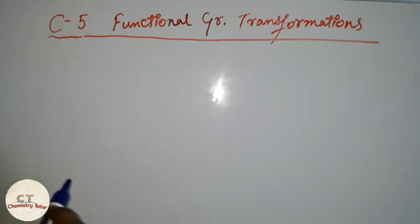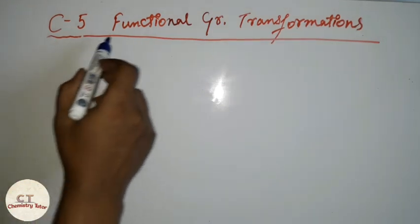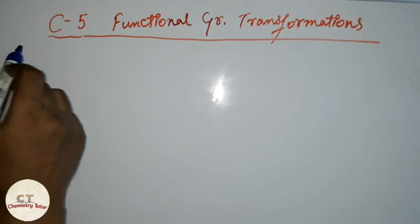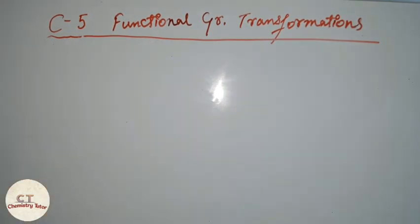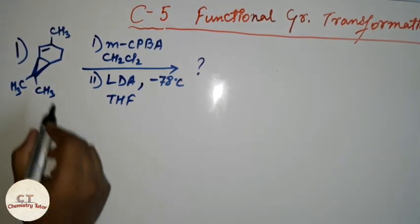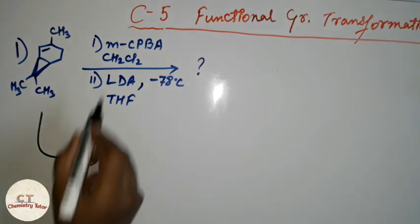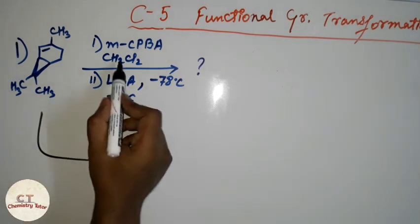Hello everyone, welcome to my channel. Today we will be discussing chapter number five, functional group transformations, from JFL and Nunn's solution manual. Let us start with this question. First of all, MCPBA is given in presence of dichloromethane.